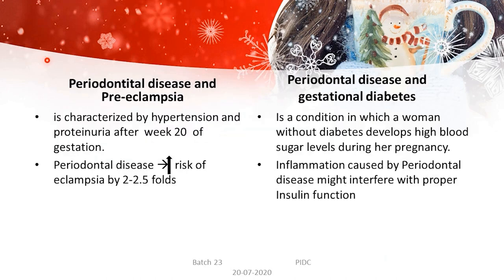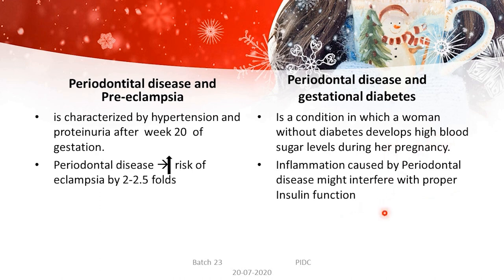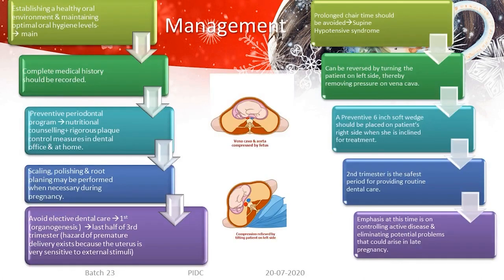Preeclampsia is characterized by hypertension and proteinuria after week 20 of gestation. Studies showed that periodontal disease increases the risk of preeclampsia by around 2 to 2.4 times, making periodontal disease control necessary. Periodontal disease and gestational diabetes are also connected: gestational diabetes is a condition in which a woman without diabetes develops high blood sugar during pregnancy, and inflammation caused by periodontal disease might interfere with proper insulin function, leading to elevated blood sugar. It is always necessary to control periodontal disease in pregnant women.